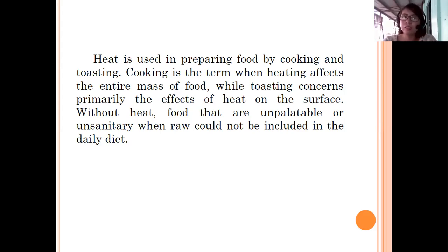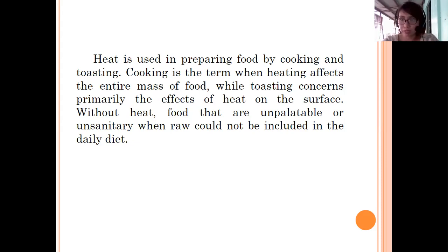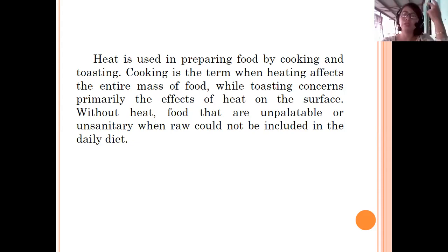The difference between cooking and toasting is that with cooking, the entire mass is affected. So if you cook meat, it is thoroughly heated — the entire mass, from raw to cooked, from gahi to humok. While toasting, only the surface is affected — you only brown or toast the surface.